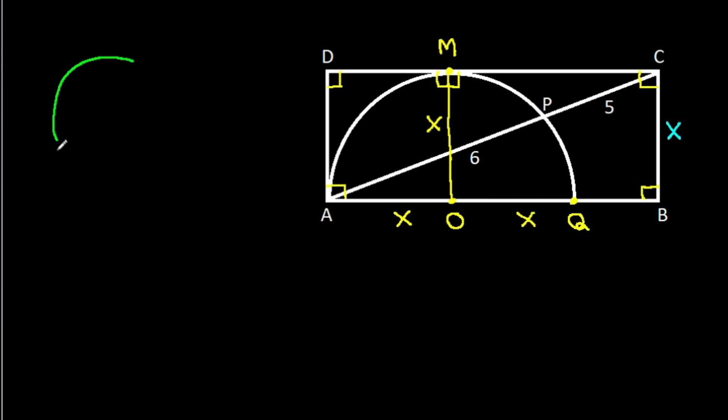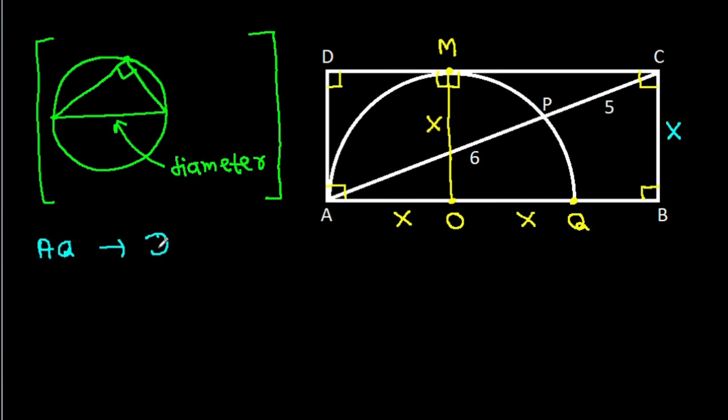Now, in any circle, diameter makes an angle of 90 degrees on the circle. And AQ is the diameter. So angle APQ will be 90 degrees.